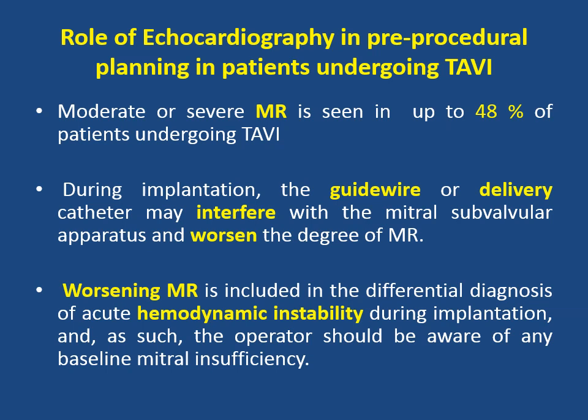During implantation, the guide wire or delivery catheter may interfere with the mitral subvalvular apparatus and worsen the degree of mitral regurgitation. Worsening mitral regurgitation is included in the differential diagnosis of acute hemodynamic instability during implantation, and as such, the operator should be aware of any baseline mitral insufficiency.